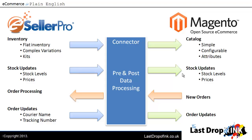Let's look at this a little deeper. We've got eSeller Pro on the left and Magento on the right, with the connector in the middle — and it's the connector which allows both pre and post data processing. On the left-hand side, eSeller Pro is responsible for inventory: flat inventory (items with no variations), complex variations, kits, and other inventory types. Stock levels and pricing are controlled within eSeller Pro. Orders come back to eSeller Pro and go through its standardized order processing, and when orders are marked shipped it comes back through the connector and updates Magento.